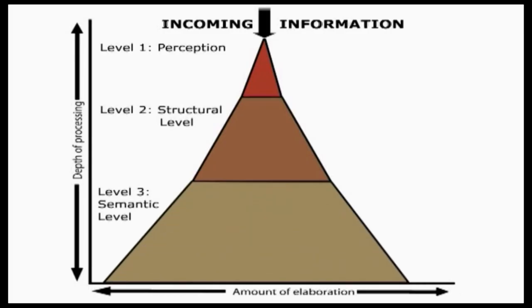At the perceptual level, one becomes aware of the immediate environment. The structural level is somewhat deeper compared to the perceptual level — here one emphasizes the structural features of the information. The deepest level of processing is the semantic level, where one derives profound meaning of the information. This model explicates that the deeper the processing, the more is the elaboration. In other words, deeper and more meaningful analysis leads to more durable memory of the information.